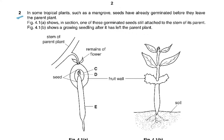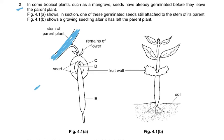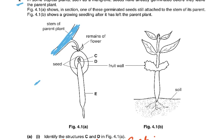Question 2. In some tropical plants such as mangrove, seeds have already germinated before they leave the parent plant. Figure 4.1a shows a section of one of these germinated seeds still attached to the stem of its parent. Figure 4.1b shows a growing seedling after it has left the parent plant — it has fallen onto the ground and developed roots in the soil.